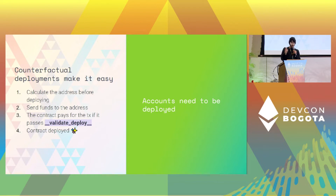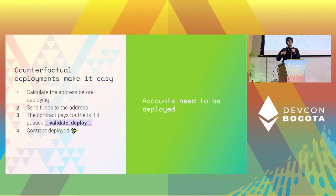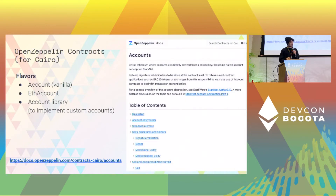Since accounts are contracts, you need to deploy them and pay for deployments. We can do counterfactual deployments: you calculate the address of your contract before sending funds to that address which has no contract yet. Then there's a validate_deploy function that the protocol uses to validate whether the funds on this address can be used to pay for the transaction, and then you deploy your smart account.